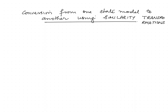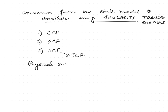While discussing state models, we have seen three different types: controllable canonical form, observable canonical form, and diagonal canonical form — a subset of which is Jordan canonical form. We have also seen physical state models, which do not belong to any of the above canonical forms, such as state models for an RLC circuit with physical variables as state variables.